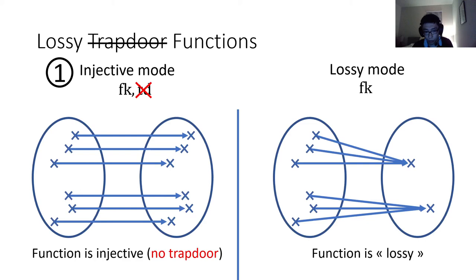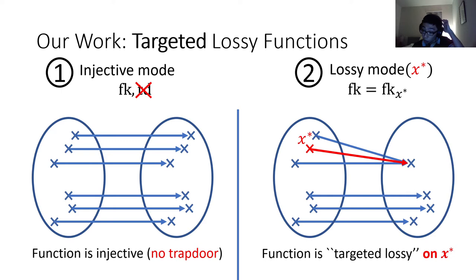So let's relax the notion of lossy trapdoor functions. One of the reasons lossy trapdoor functions imply public key encryption is the presence of a trapdoor — so that will be our first relaxation: we won't require anymore the existence of a trapdoor in injective mode. We also introduce a second relaxation, which gives the name to our notion: targeted lossy functions. The lossy mode will be with respect to a particular target, which I'll call X star.